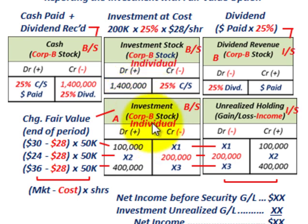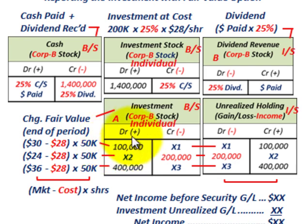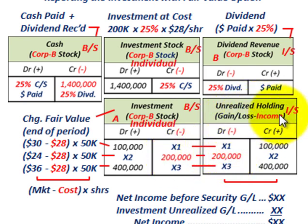The investment stock cost account just sits at cost until you sell off the securities. With the fair value option, you set up this separate investment account — not a valuation account to your investment stock cost — just a separate account keeping track of the fair value change. Once you select the fair value option, you stick with it and continue recording changes in that individual account, with any period-to-period changes reported as unrealized holding gain or loss on the income statement.